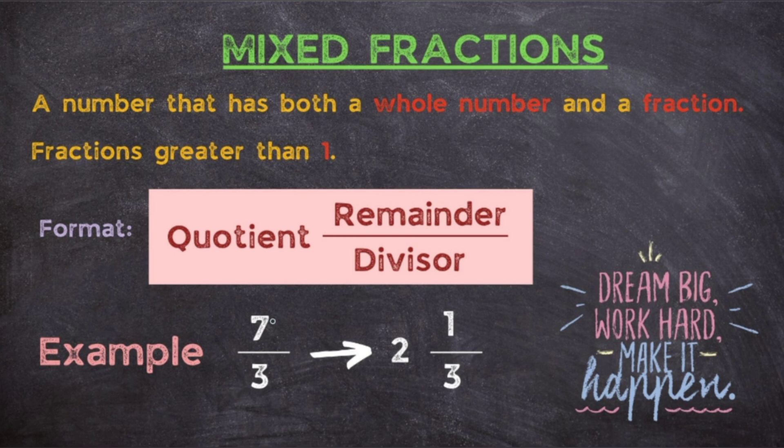Well, whenever you see a fraction where the numerator is bigger than the denominator, like in this example you can see 7 is bigger than 3, so whenever you see such type of fraction you will be required to simplify it or convert it into the simplest form. So how to do it?